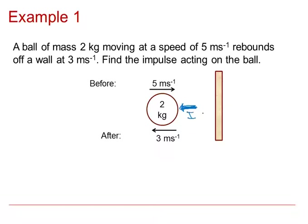The wall is going to push the ball back to the left. My method: impulse equals final momentum minus initial momentum. We're dealing with vector quantities, so I need to specify which direction is positive — I'm going to take right as positive. The impulse on the ball is I to the left, so in my method the impulse is a negative I.